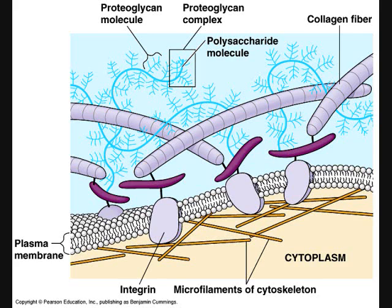These specialized proteins are bound to receptor proteins called integrins that are built into the plasma membrane. These integrins go through the plasma membrane and bind on the inside of the cell to proteins that are attached to microfilaments. This allows the inside and outside of the cell to interact — thus the name integrin.